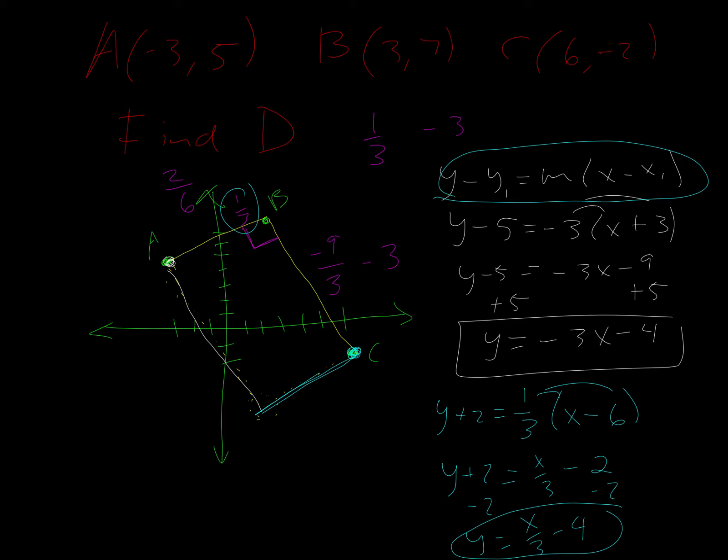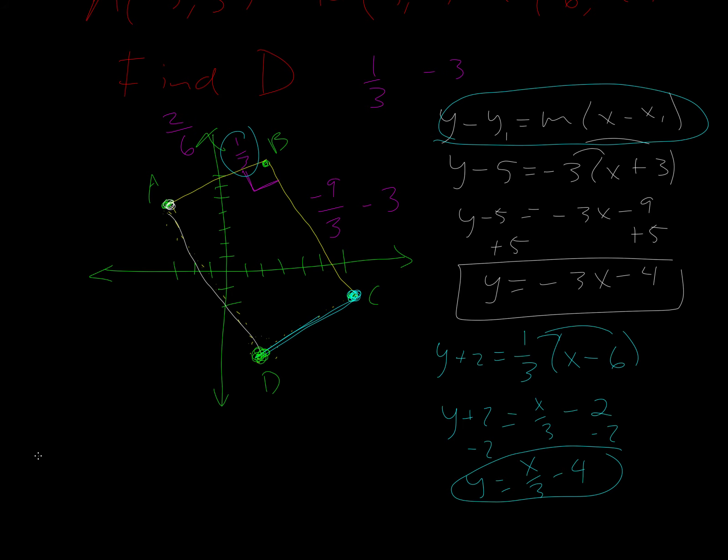Okay. Now, we need to know where the blue line and the white line cross, because where they cross is going to be point D. So to do that, we're just going to set them equal to each other. So I'm going to say negative three X minus four equals X over three minus four. So once again, I just took this and set it equal to this. Since they're both equal to Y, you can do that.